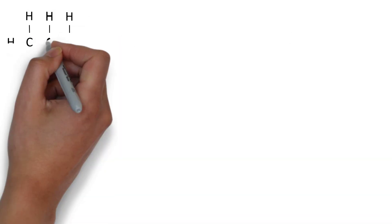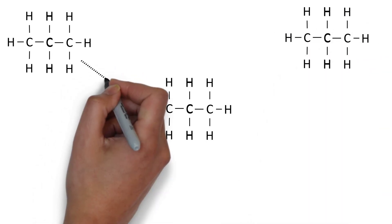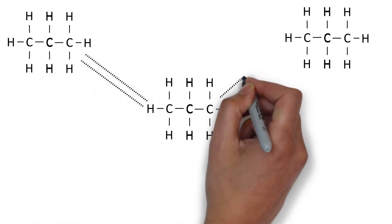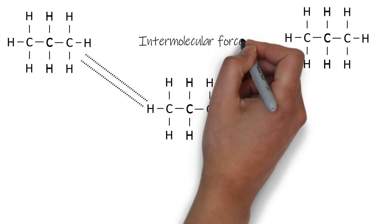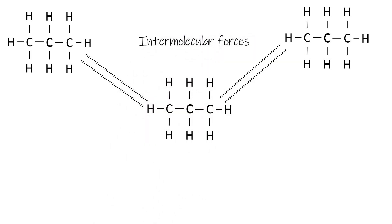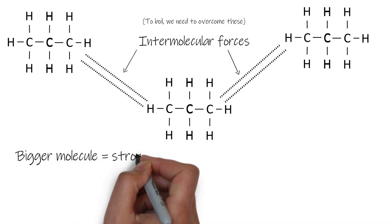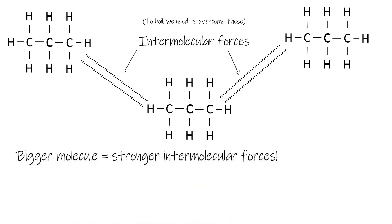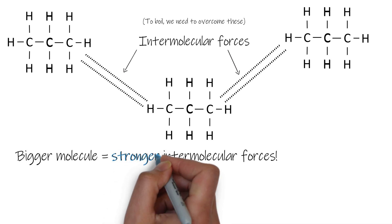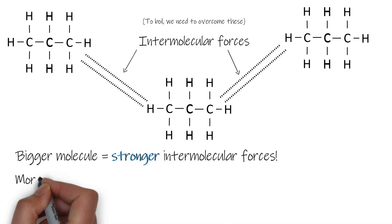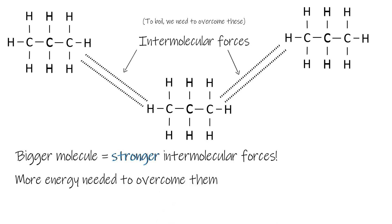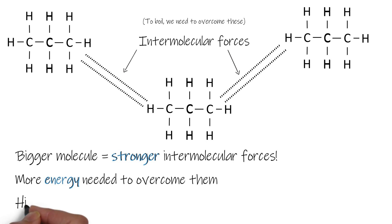Now let's look at propane, which has three carbon atoms instead of one. It's a bit bigger. On the propane molecule the intermolecular forces between them are much stronger — that's why I've drawn two lines instead of one. The forces between molecules that we have to overcome to boil them are stronger because the molecules are bigger. Stronger intermolecular forces means more energy is needed, so we'd have to get the compound hotter before it boils — giving it a higher boiling point.